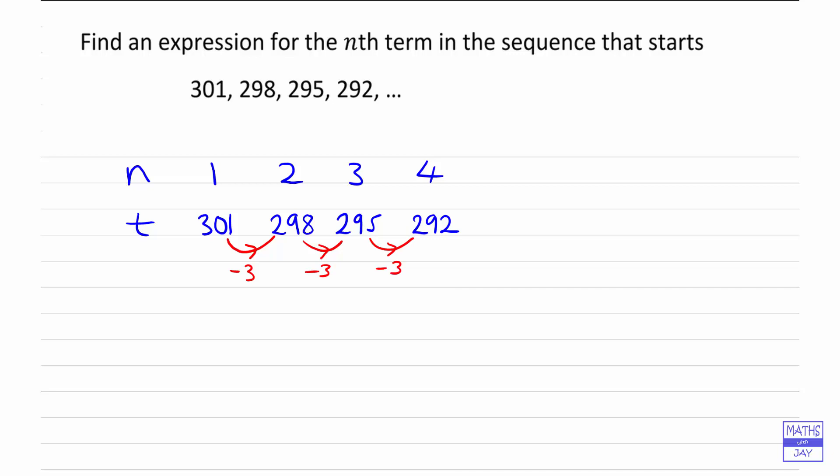That is going to give us the first part of our formula. So the formula for the nth term starts off with this number: minus 3 multiplying n.